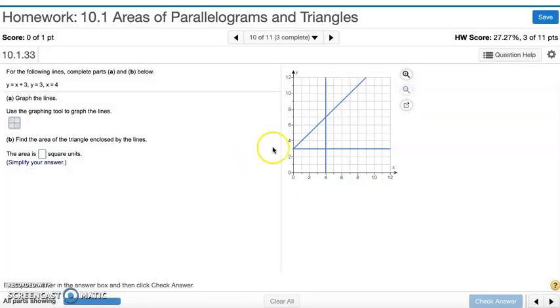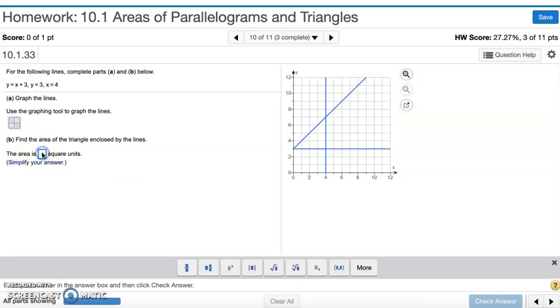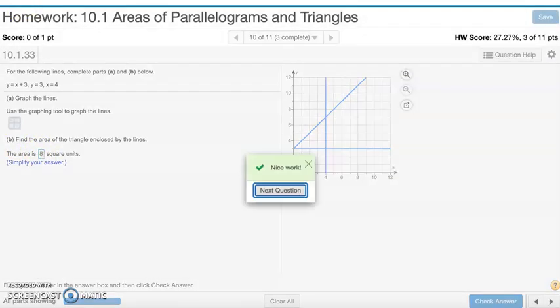Now let's find the area of the triangle enclosed by the lines. So making this larger, we have a height of 4 and a base of 4. So 4 times 4 is 16, divided by 2 is 8. And that's number 10.